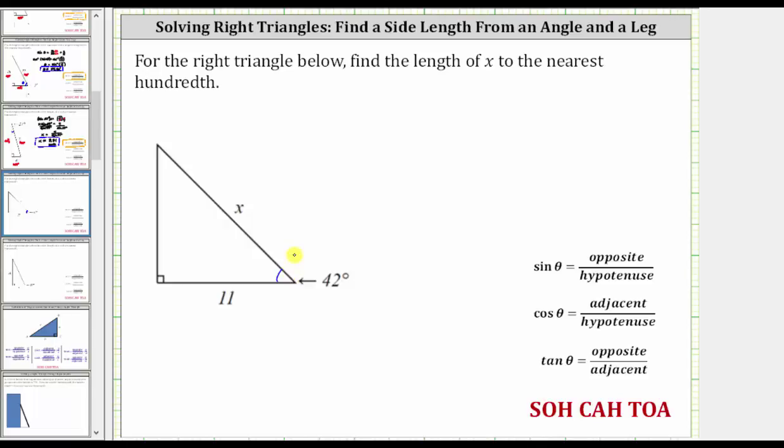For the next step, let's determine the opposite side, adjacent side, and hypotenuse in relation to the given angle. Notice how the opposite side is going to be this side here that has an unknown length.